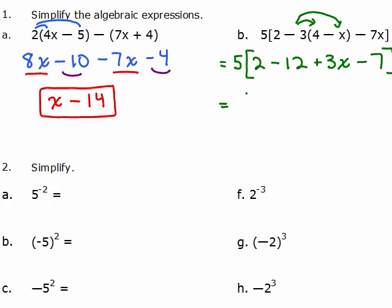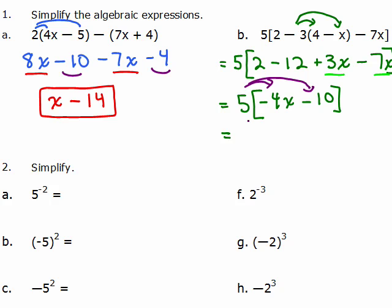Inside the parentheses I combine like terms. I still have my 5 and my bracket, and 3x minus 7x is negative 4x. Then 2 minus 12 is negative 10. Now I distribute the 5: 5 times negative 4x is negative 20x, and 5 times negative 10 is minus 50.